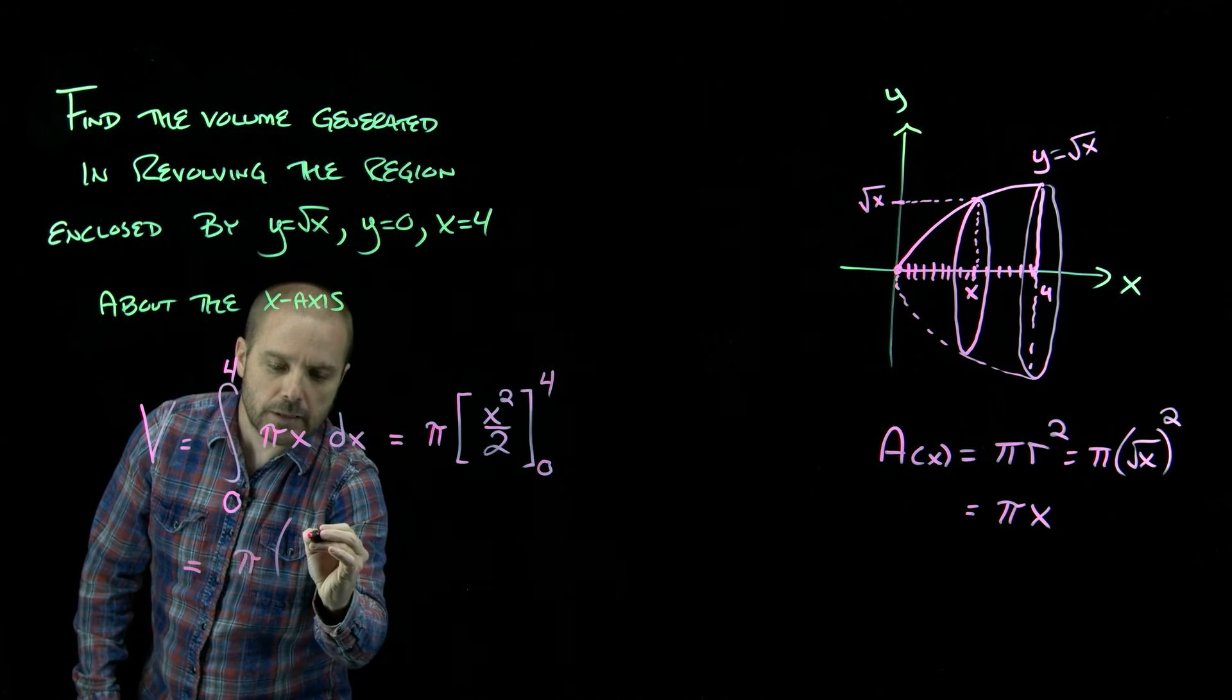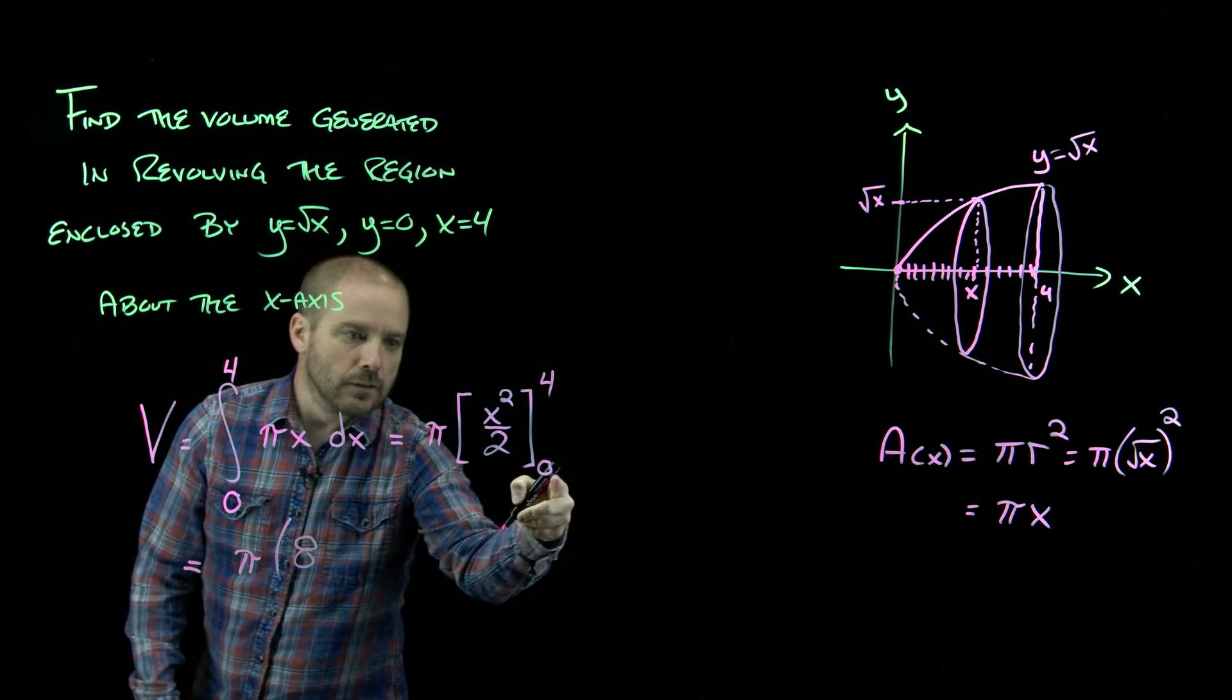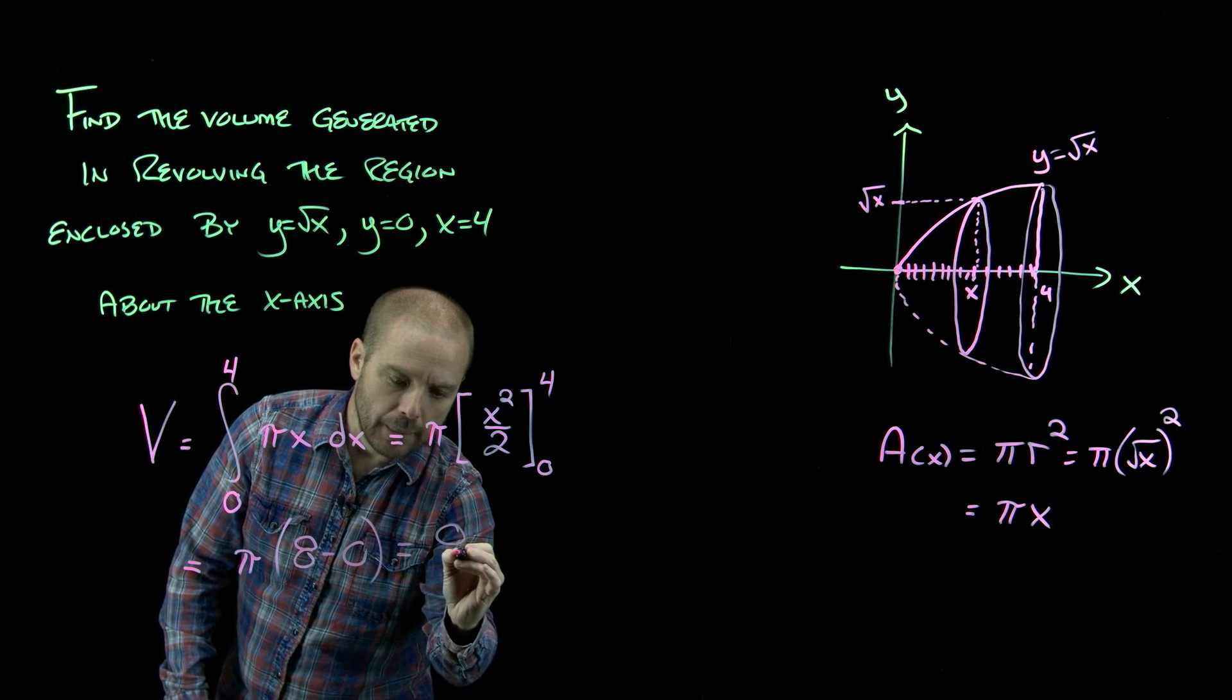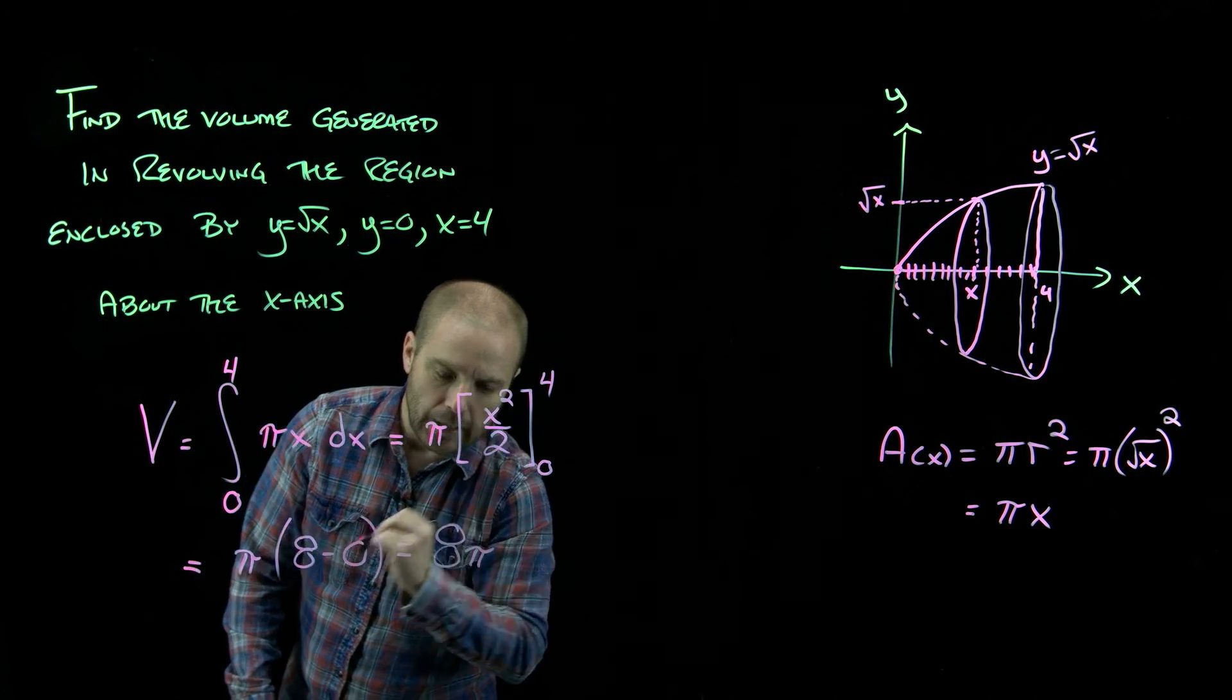4 into there would be 16 over 2 or 8. 0 into there would be 0. And so we get 8 pi.